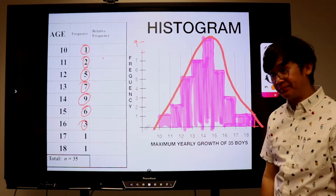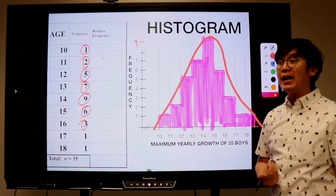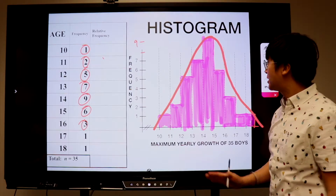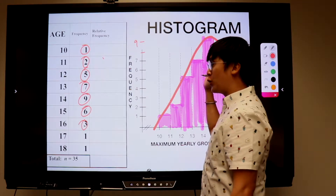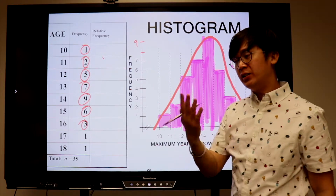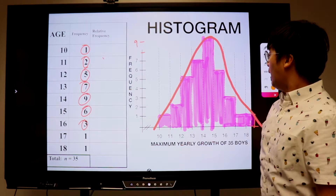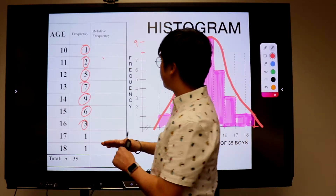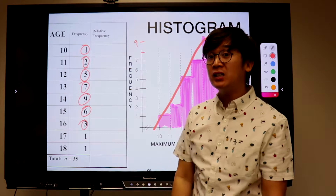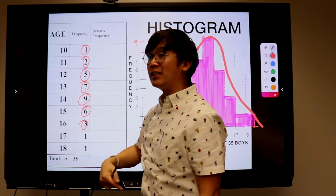The result is a bell-shaped curve. That is the power of a histogram because it gives you the shape of the distribution. Now you can say that your distribution is approximately normal, which means 50% of your distribution is evenly distributed in the left and in the right tail. To make it more informative, let's compute for the relative frequency. The relative frequency is basically changing all these frequencies into percent form.